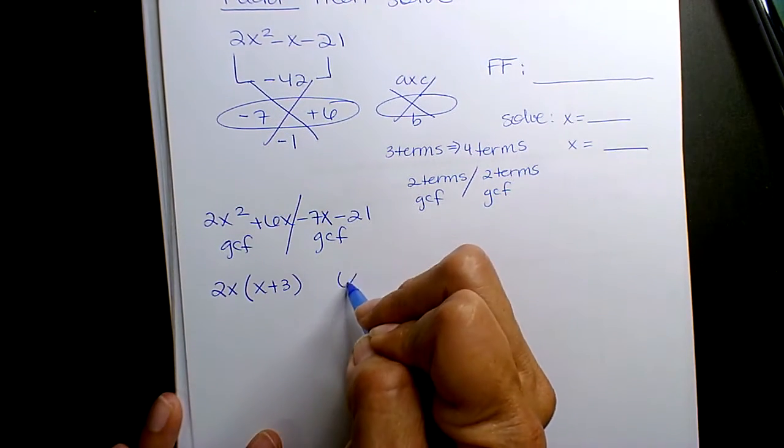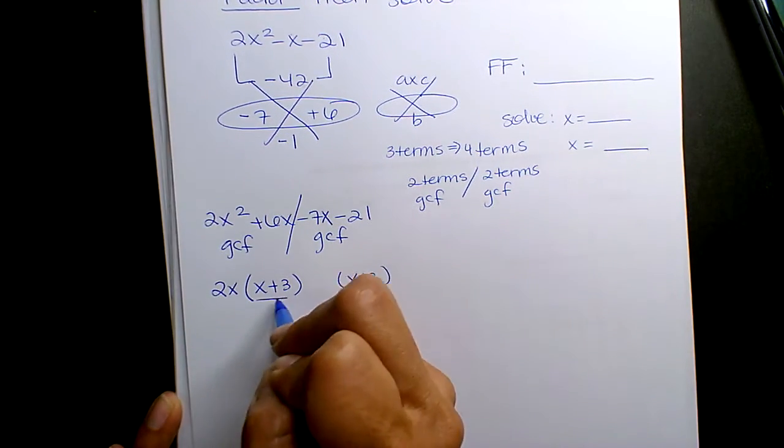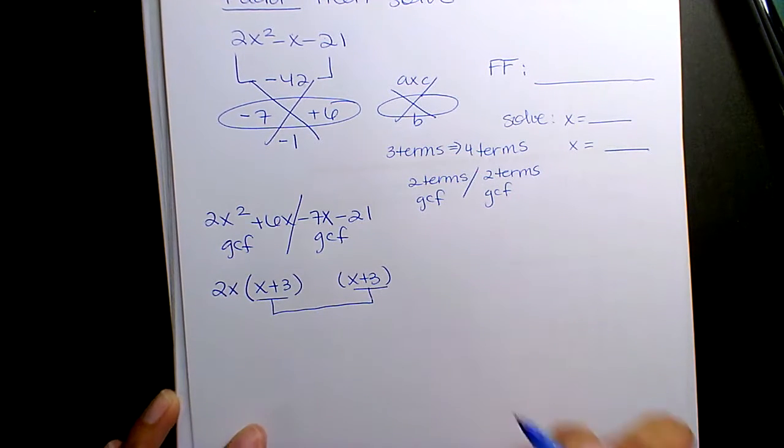Okay, if you do this correctly, this should always match. Once you GCF, they should always match. If they don't match, you did something incorrectly, you wrote it wrong, you messed up the sign. You gotta go back and double check your work.